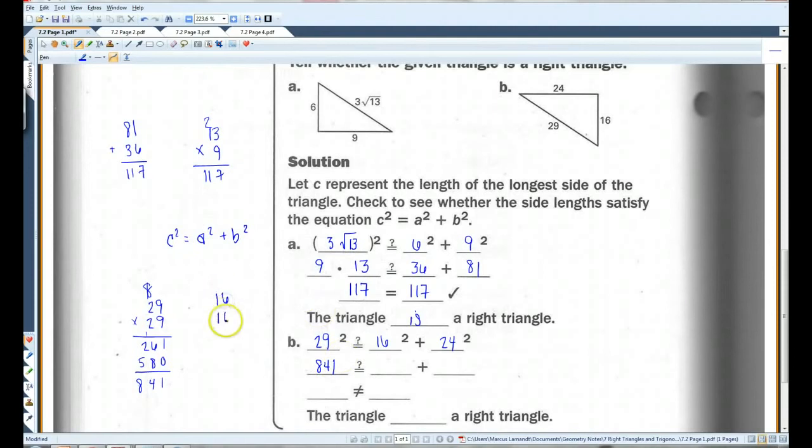16 squared, 21 squared. 256, and 24 squared, let's see here, I believe that's 576. So 841, if you add these two together, I'll just do it over here. Already you know it's not going to be the same because this is a 2. Oops, sorry, that's an 8.